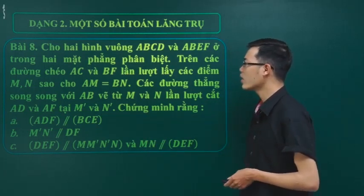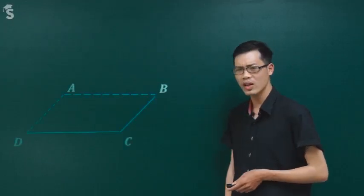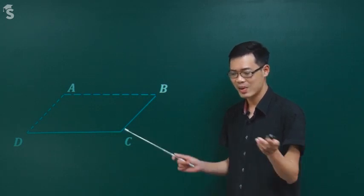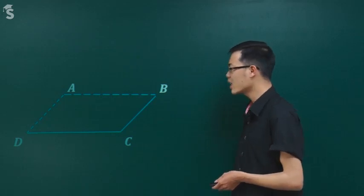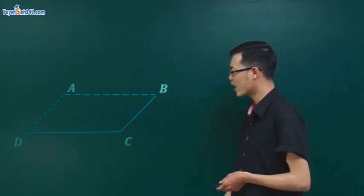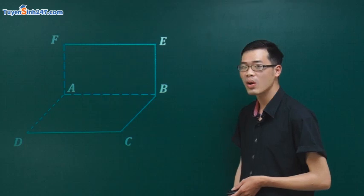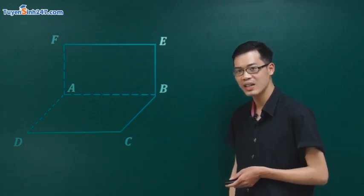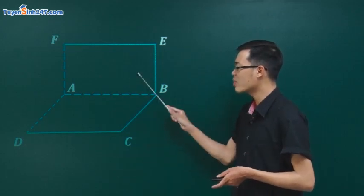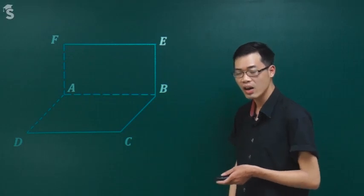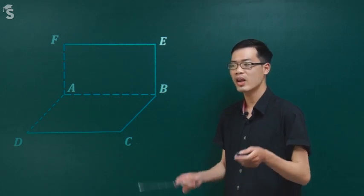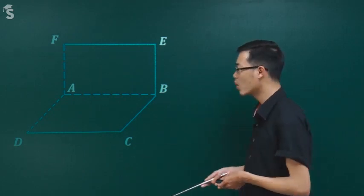Các em nên nhớ là vẽ hai hình vuông. Tại sao người ta không nói là vẽ lăng trụ? Hôm trước có một bài vẽ hai hình bình hành nằm trong hai mặt phẳng phân biệt và có chung một cạnh. Ở đây khi vẽ hình vuông, các em lưu ý là nó cũng bị bóp méo đi, nó thành hình bình hành hết. Vẽ hình vuông vào đây nó cũng bóp méo như thế này vì nó nằm ở hai mặt phẳng phân biệt và có chung cạnh AB.